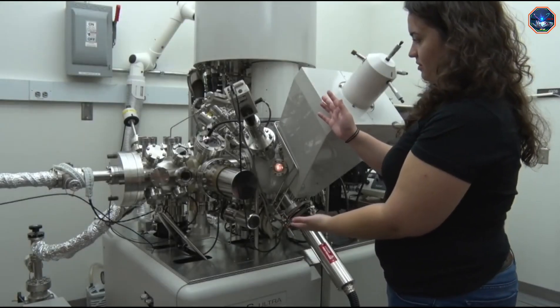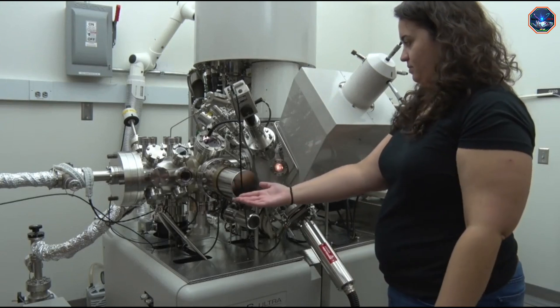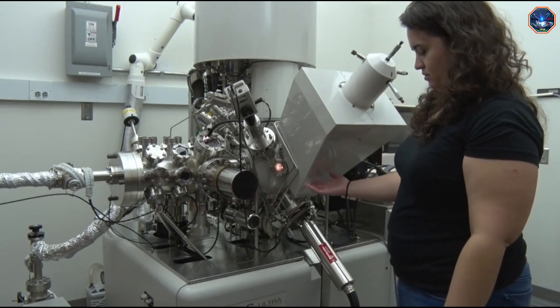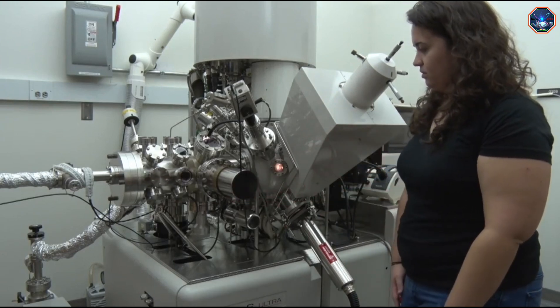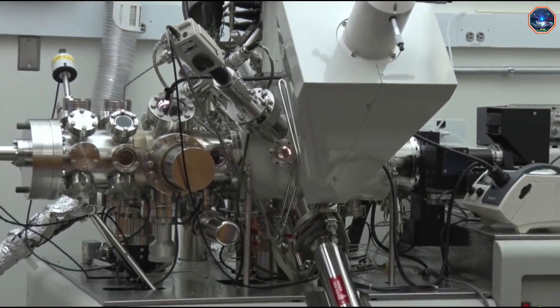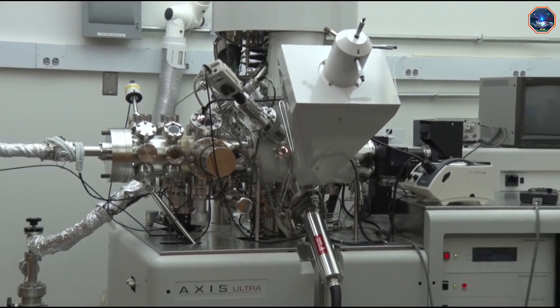This is the XPS chamber. It's a large vacuum chamber that's held at pressures in the 10 to the negative 9 torr range. Let me point out the important parts of the chamber to you before we get started.